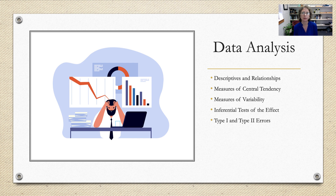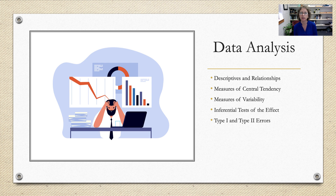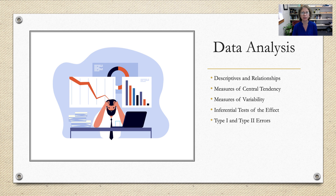The next step is data analysis, which falls into two main camps: descriptive statistics and inferential statistics — we'll cover those more in chapters 12 and 13. Along the way we'll discuss measures of central tendency, measures of variability, and type one and type two errors — the probability of making an error in our conclusions. I've also linked a website on Canvas about the seven most common data analysis mistakes to avoid.